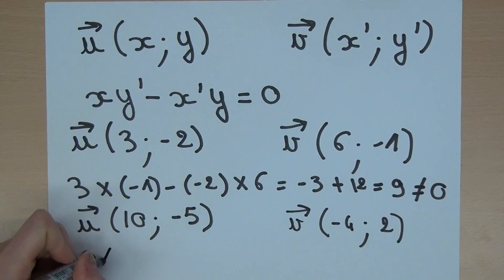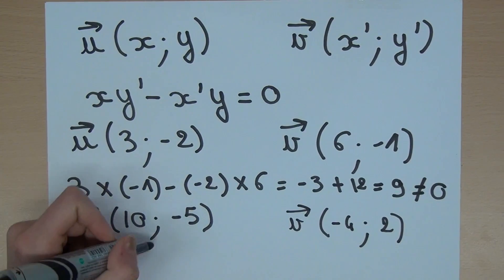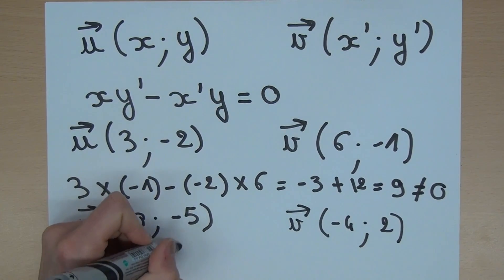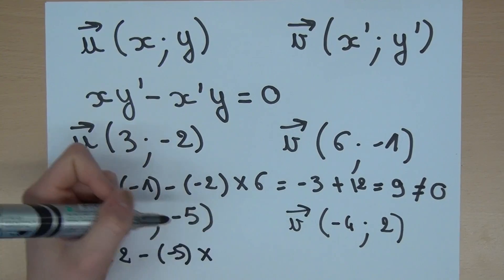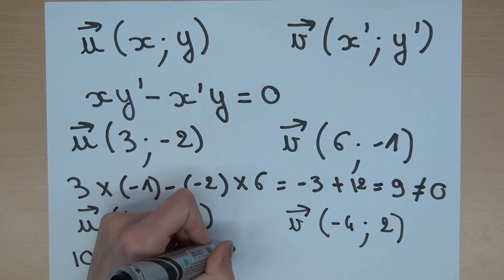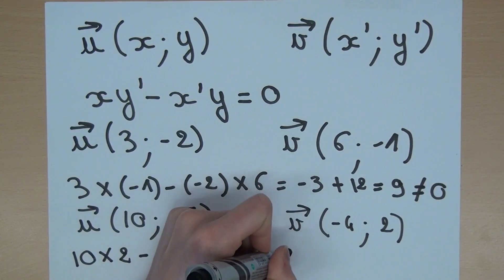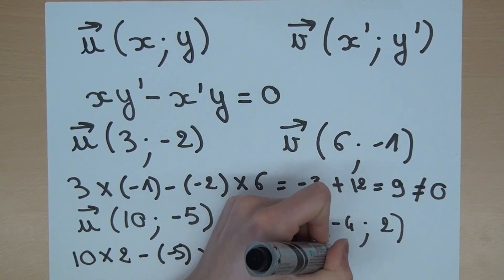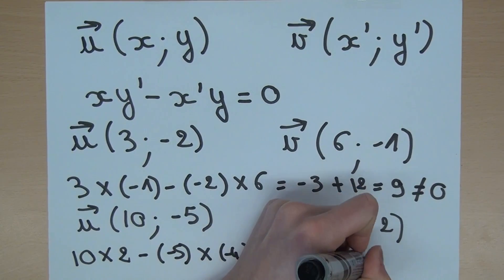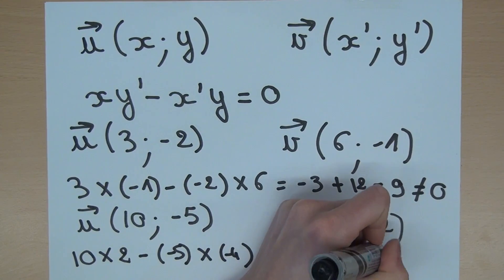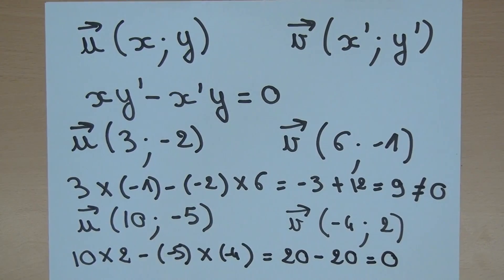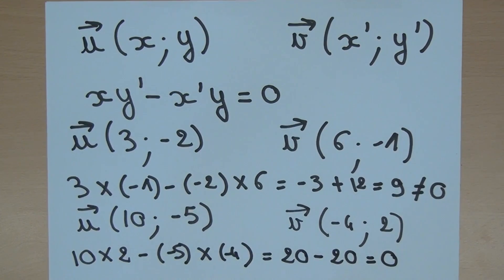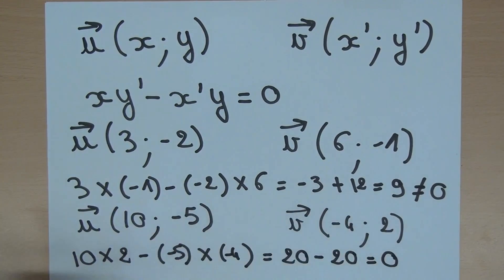So, 10 multiplied by 2 minus -5 multiplied by -4 equals 20 minus 20 and equals 0. So the result is 0, so these two vectors are collinear.